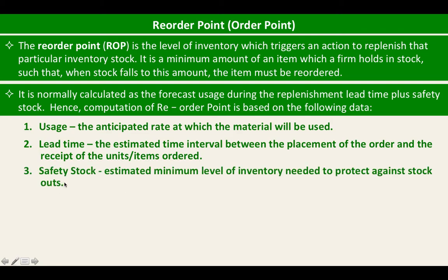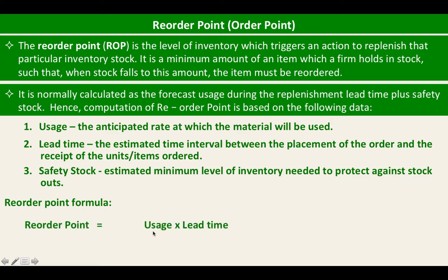Third is safety stock: the estimated minimum level of inventory needed to protect against stock-outs. If there is a delay in delivery by the supplier, you still have some stocks in the warehouse — that is your safety stock. You also have to consider this in calculating your reorder point. The reorder point formula is: usage times lead time, plus safety stock.